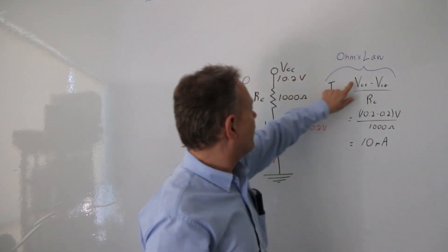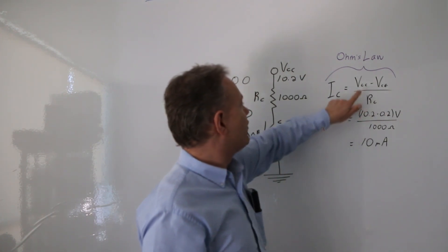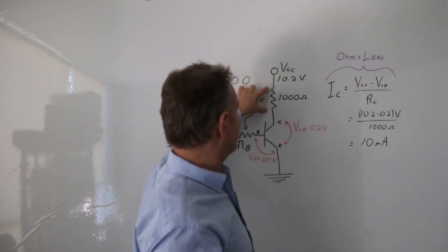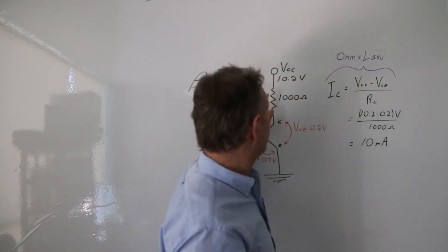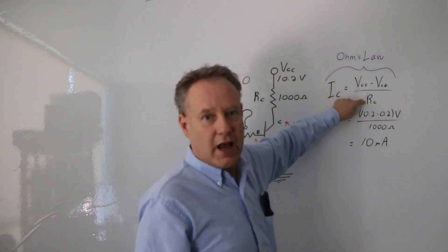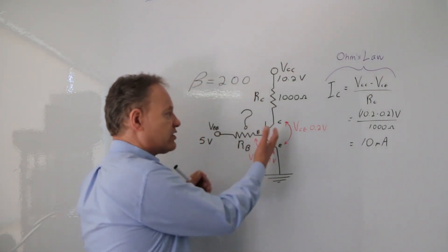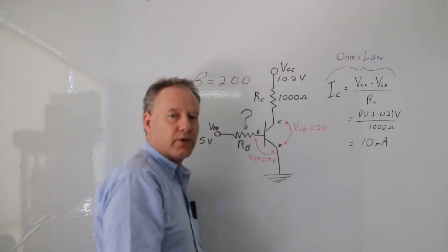So Ohm's law tells me the current is the voltage divided by the resistance. The voltage is the source voltage minus this. That's my voltage across this resistor divided by this resistor, and that gives me the current. So I got 10 milliamps. So essentially when this switch is closed, 10 milliamps will go through.